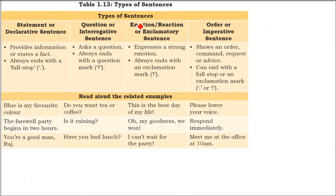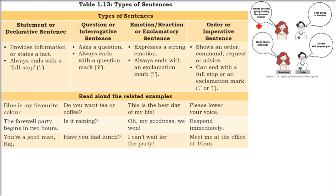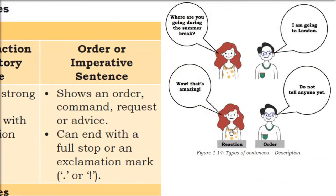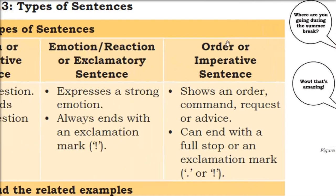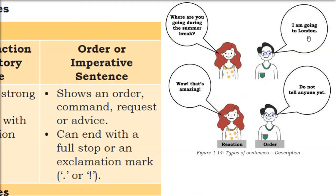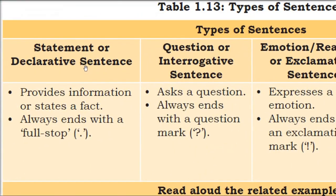What are the types of sentences? We have four main categories: declarative sentences or statements, question or interrogative sentences, emotion or exclamatory sentences, and order or imperative sentences. For example: Where are you going during this summer break? — that is an interrogative sentence. I am going to London — that is just information being given, so it is a declarative sentence.